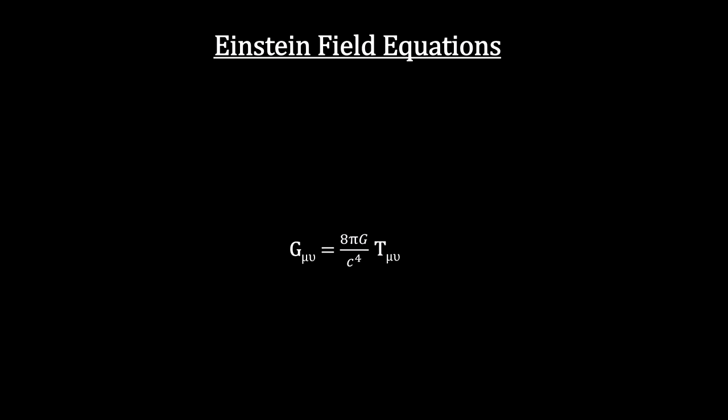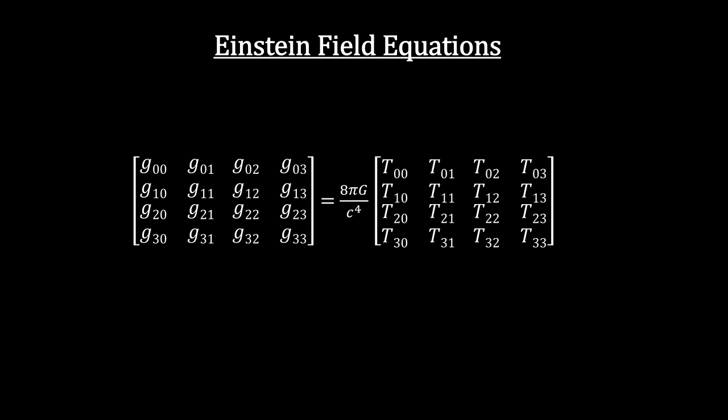This looks simple enough, but because they're tensors, it represents 40 equations with 40 unknowns. These are the Einstein field equations for general relativity.